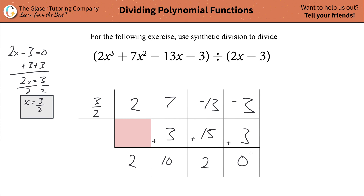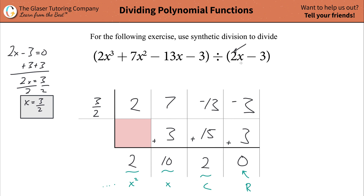Now we've got to consider what we have. Your last column is always going to be the remainder value. The next column reflects your constant term, the one after that reflects your x term, and the one after that is your x squared, and so on. Before you write out your polynomial, you have to remember one thing: look back at your divisor and look at the coefficient in front of x. Whatever that coefficient is — in this case it's 2 — you must divide every value here, other than the remainder, by 2, or by whatever that coefficient is.